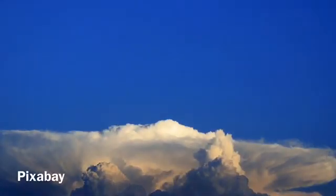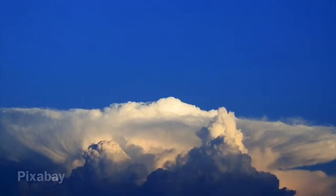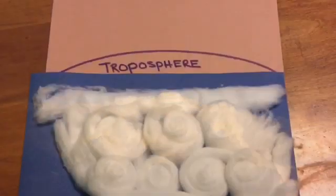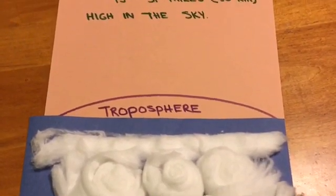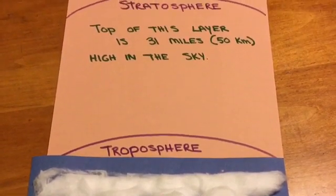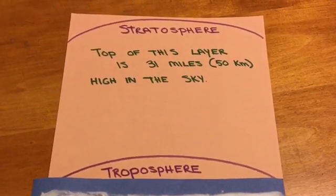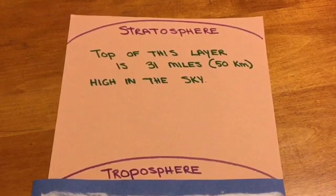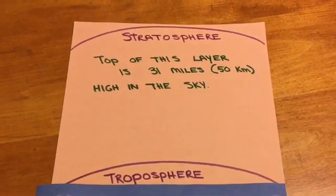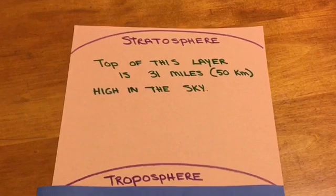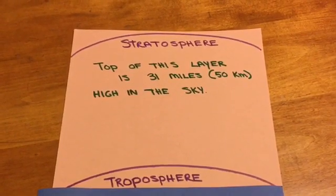Why are they flat? That's because these thunderstorms are so high in the sky they extend up to where the troposphere meets the stratosphere. In the troposphere it gets colder as you climb up higher in the sky, but in the stratosphere the opposite happens — it gets warmer as you climb up, and that stops thunderstorms from getting any taller.